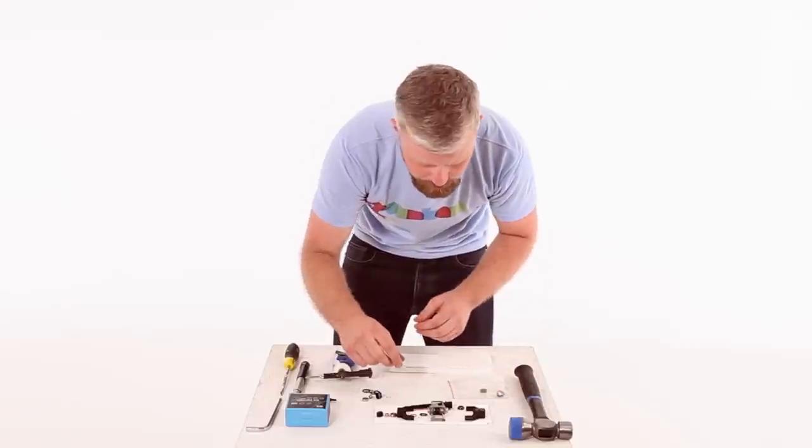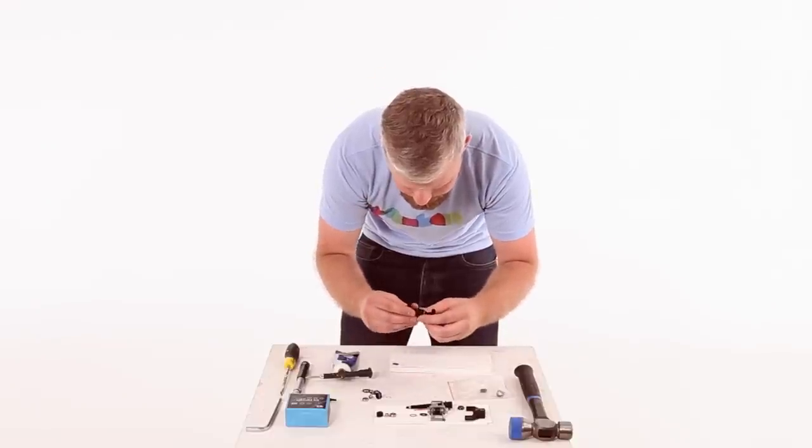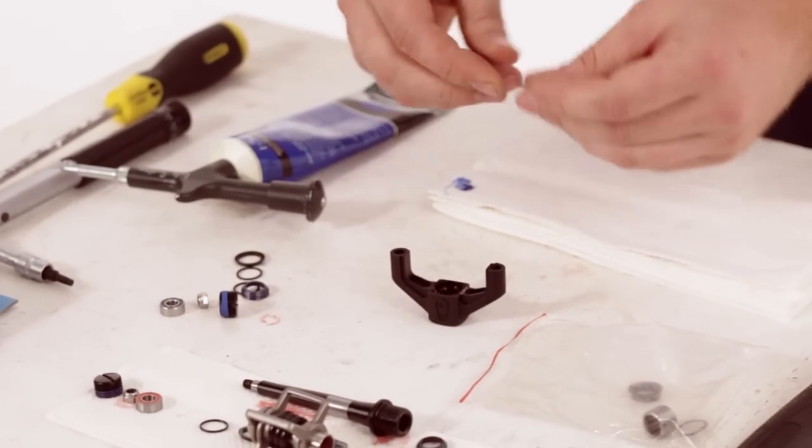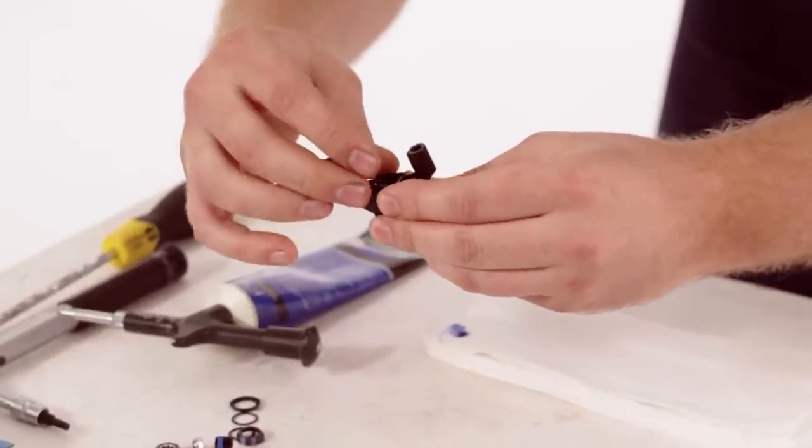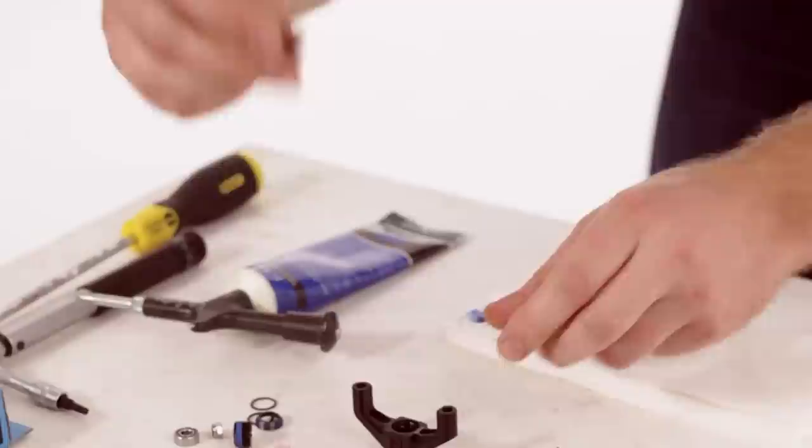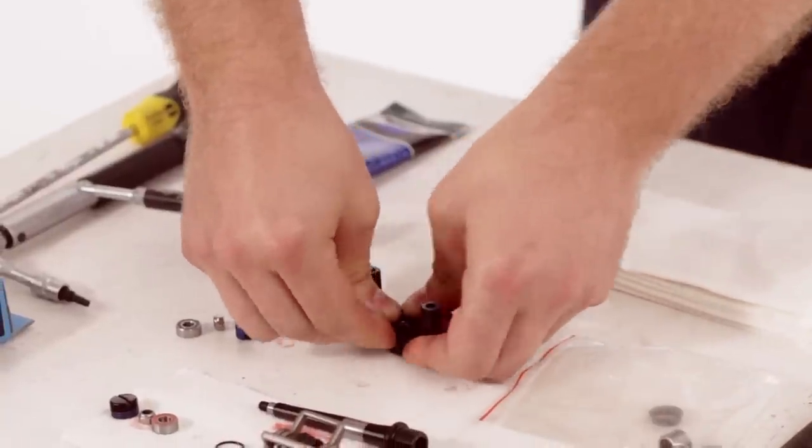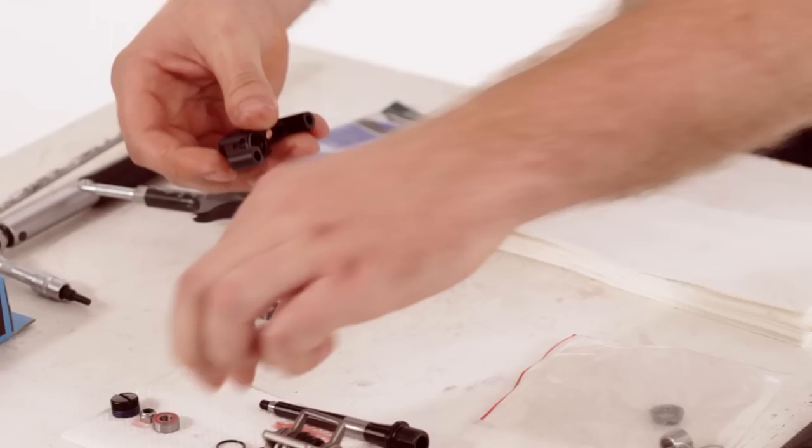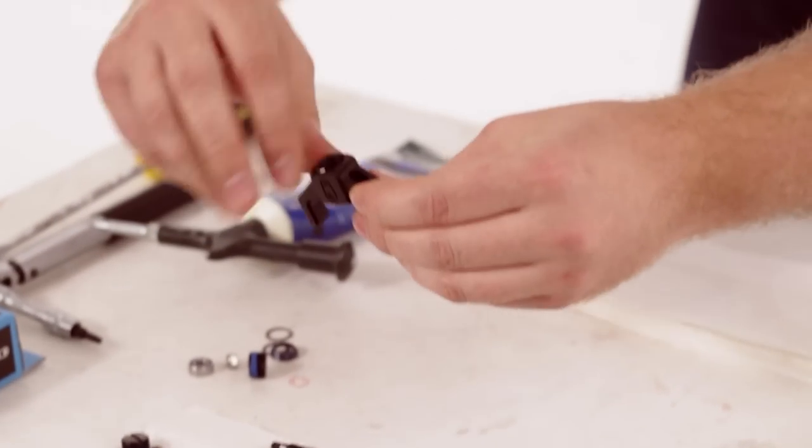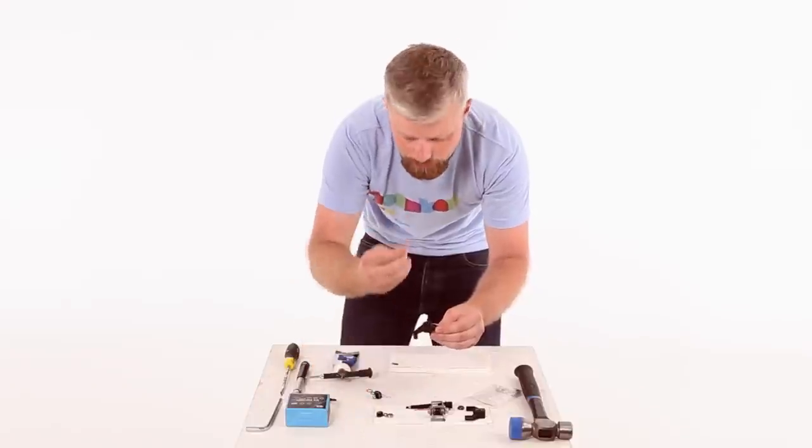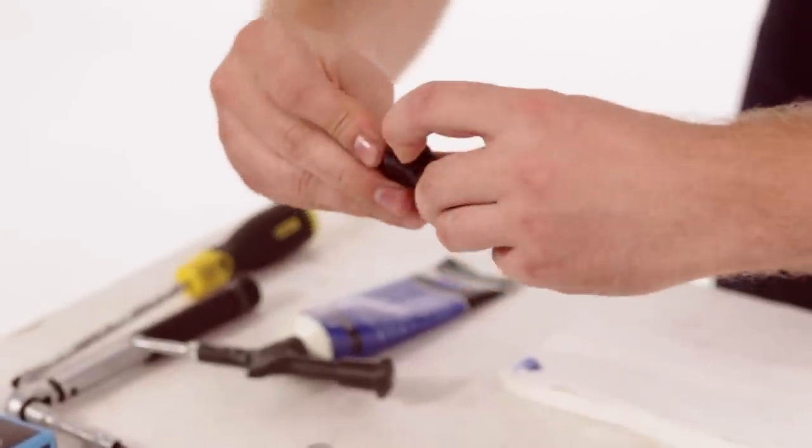And in the outer part of the pedal body, do the same again. Pop the o-ring in, and then the bush, the smaller of the two. On the other part of the pedal body as well, don't forget to replace your cartridge bearing and push it into place.